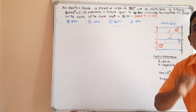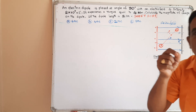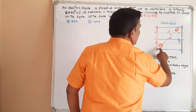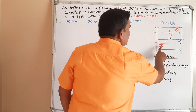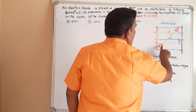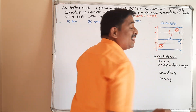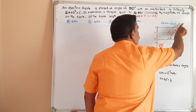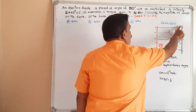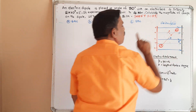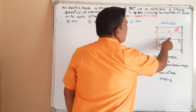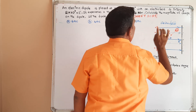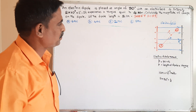Electric dipole means two equal and opposite point charges separated by a small distance — we are calling that an electric dipole. This is the negative charge and this is the positive charge. This is the length of the dipole. The direction of the dipole moment is from negative charge to positive charge. Theta is the angle between the direction of dipole moment and the direction of the electric field.